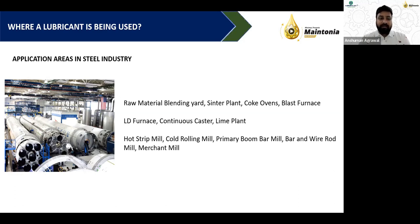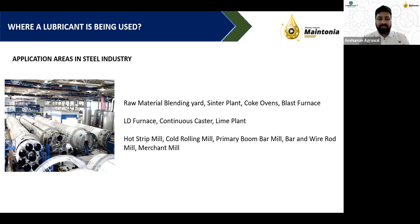Most lubricants in steel plants don't have a very long life — they get changed frequently due to leakages, heavy contaminations, and untoward incidents. The overall lubricant purchased annually for a steel industry is almost equal to the total lubricant in circulation, giving a ratio of 1:1, meaning the entire lube volume of a plant is changed roughly once a year on average.